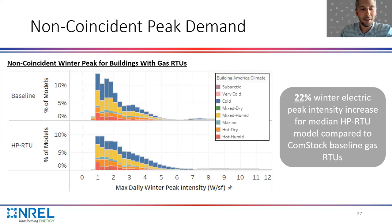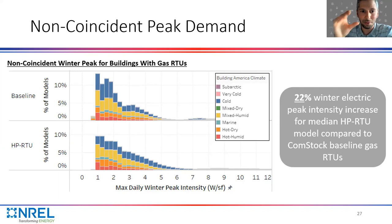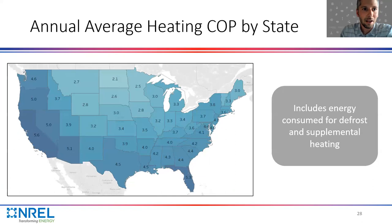For peak demand — this is non-coincident, individual building level peak demand, for Comstock buildings that had gas RTUs. We have the distribution of maximum daily winter peak intensity. The baseline is our current Comstock building stock; the upgraded version has the heat pump RTU measure applied. We see a 22% winter electric peak intensity increase for the median building when doing this transition. We see the distribution shift to higher peak intensity bands, which makes sense since we're switching from gas to electric heating.